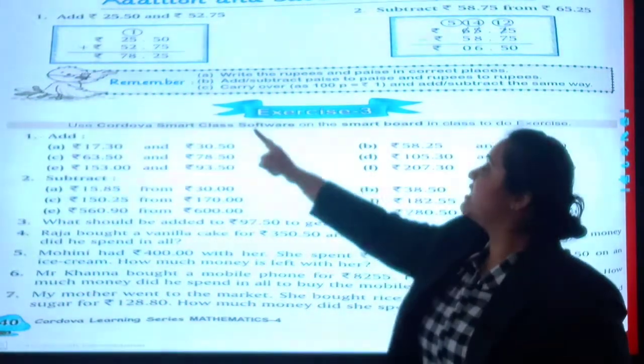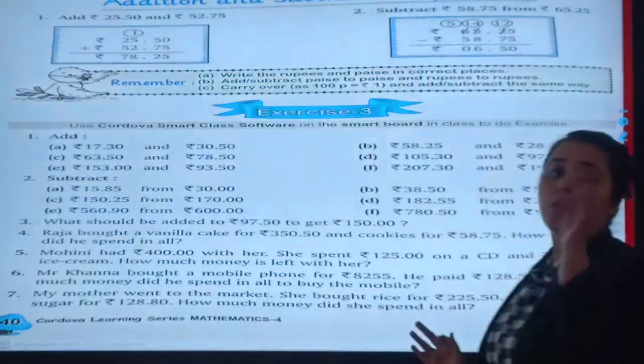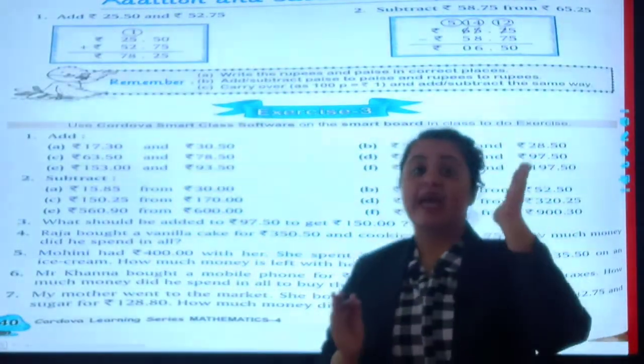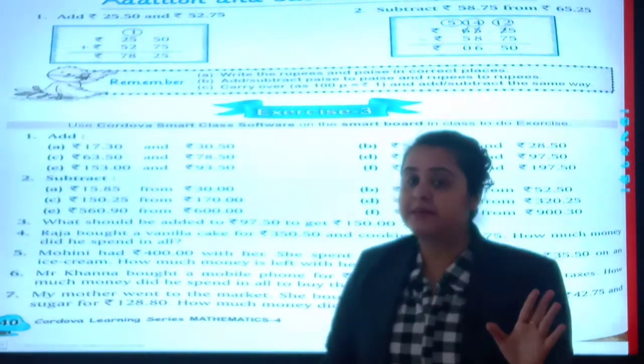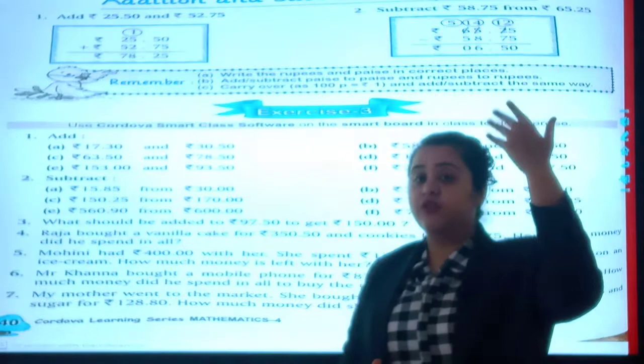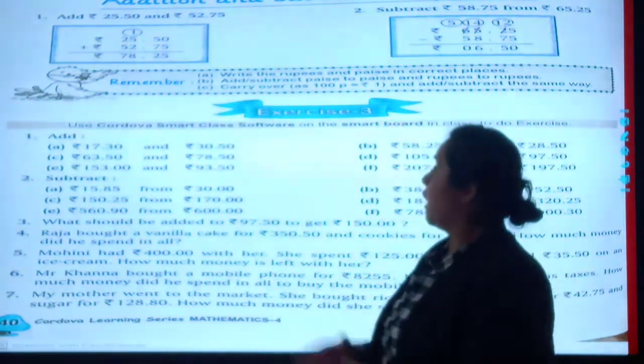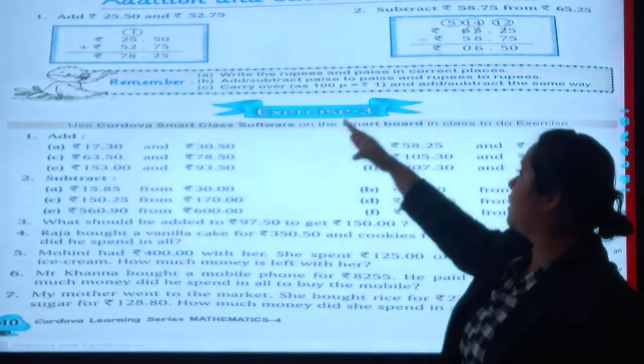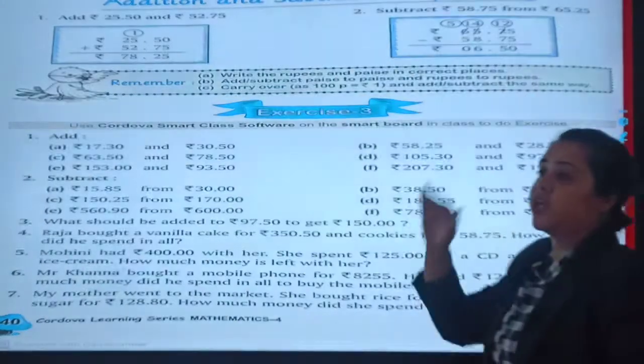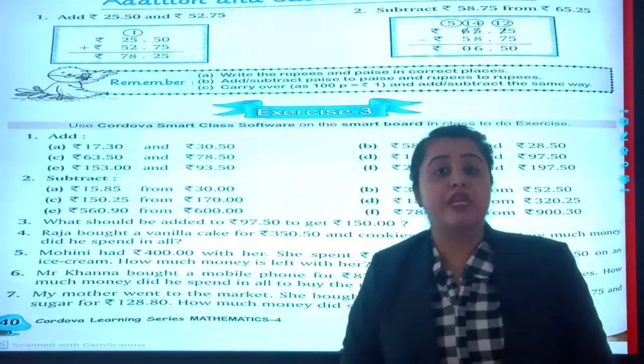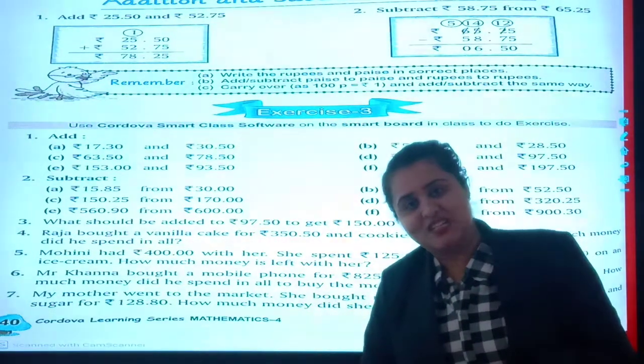Second, add or subtract paise to paise and rupees to rupees. We will always add rupees to rupees and paise to paise. We will never add rupees to paise and paise to rupees. That is wrong. Carry over, as 100 paise equals to 1 rupee will be added or subtracted in the same way. We need to remember that 100 paise equals to 1 rupee.